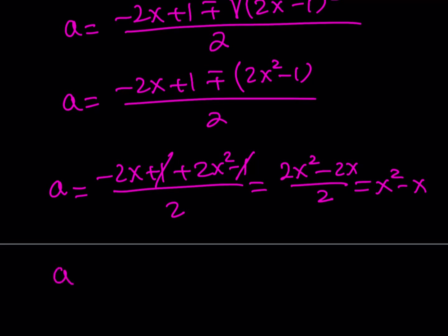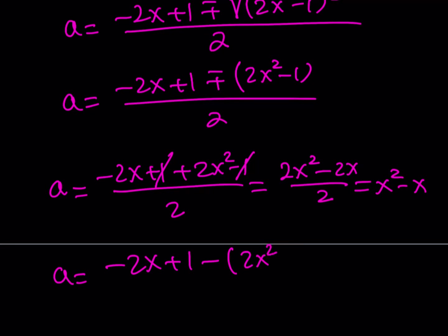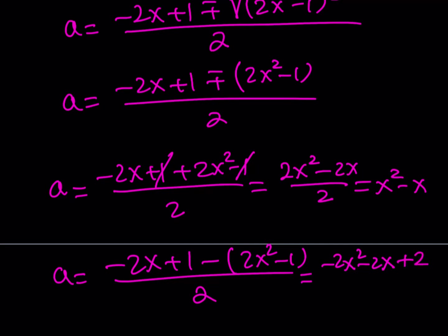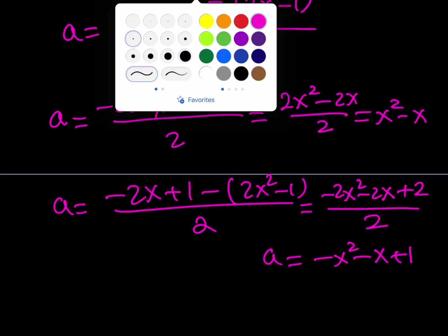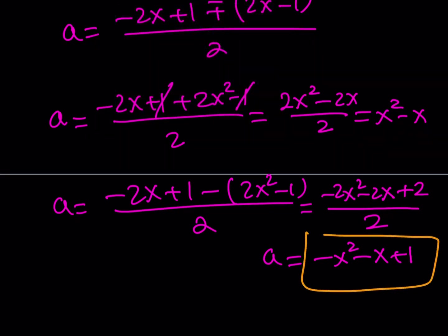For the second value, using the minus sign: we get negative 2x squared minus 2x plus 2, divided by 2, which simplifies to negative x squared minus x plus 1. So we have two values of a: a equals x squared minus x, and a equals negative x squared minus x plus 1.